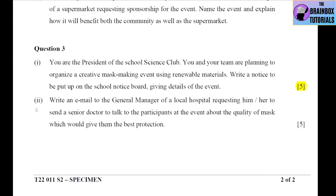Part 2 is email writing. Write an email to the general manager of a local hospital requesting him or her to send a senior doctor to talk to participants at the event about the quality of masks which would give them the best protection — this also carries 5 marks. Since you are writing to a general manager of a local hospital, it will be a formal email, short and to the point, mentioning the event's date, time, venue, the doctor's role, and a thank-you. Keep it very crisp and short.